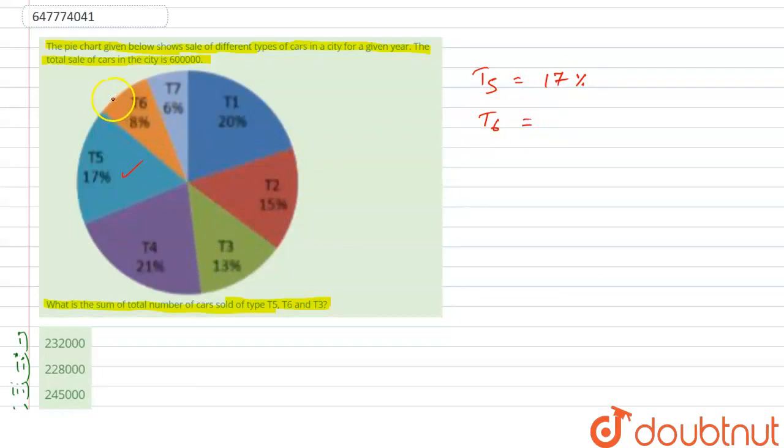Car sales, so T6 has how much percent sale? 8 percent. T3 has how much percent sale? 13 percent. Total sale: 17 plus 13 plus 8, so our total is 38 percent sale in these three varieties of cars.